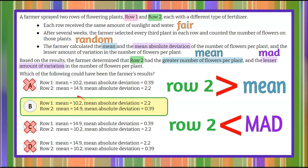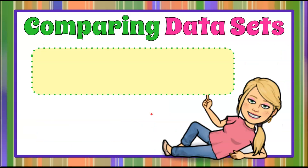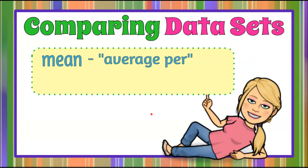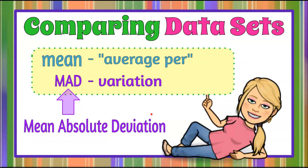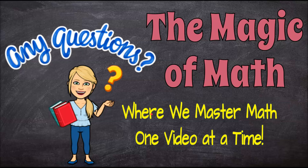The mean is greater and the mean absolute deviation is less. That is how you compare data sets using mean or average and MAD for variation, which represents mean absolute deviation. Thanks for joining me today at The Magic of Math, where we master math one video at a time.